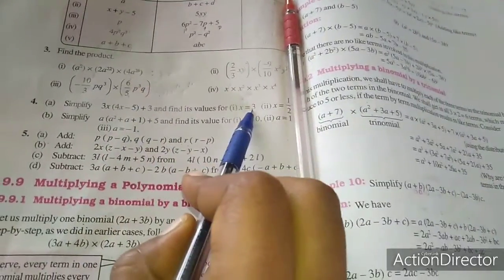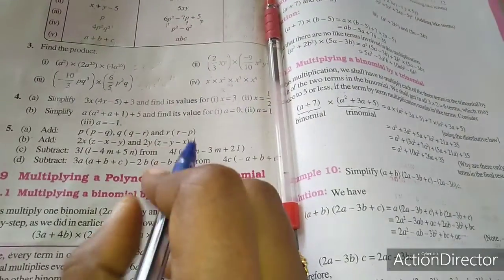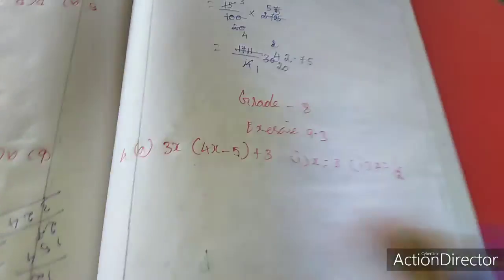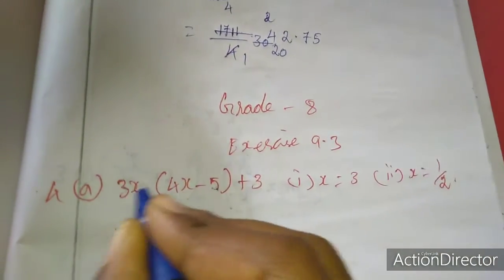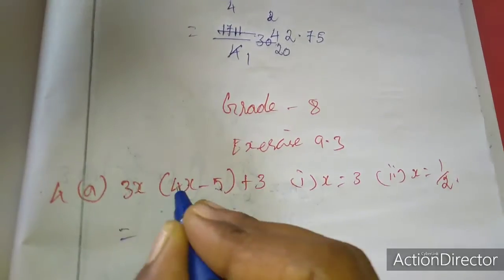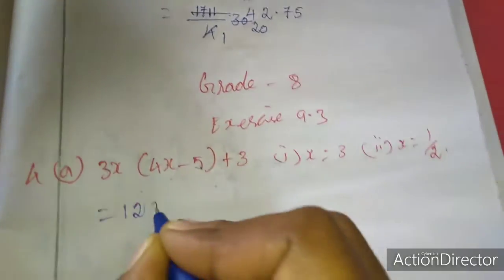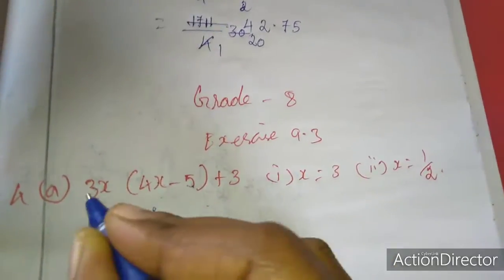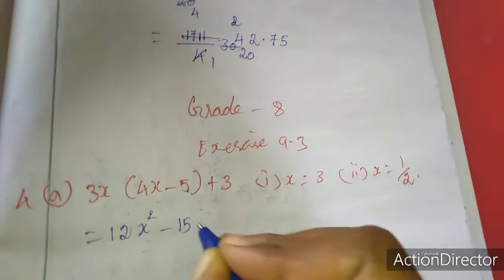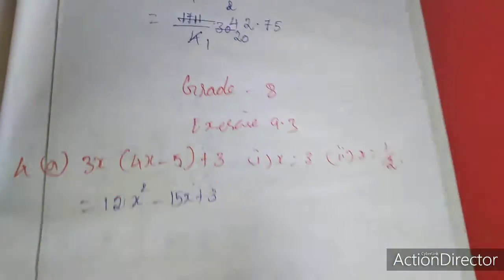First they are telling us to simplify, so I am simplifying now. 3 into 4 is 12. 3x into 4x: 3 into 4 is 12, x into x is x square. Minus 3 into 5 is 15x plus 3. This is the simplified form.